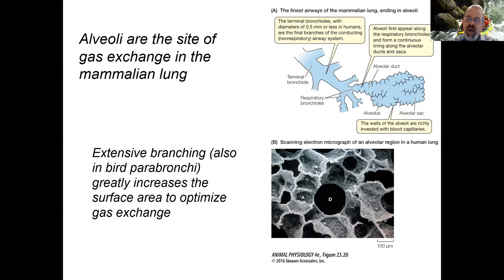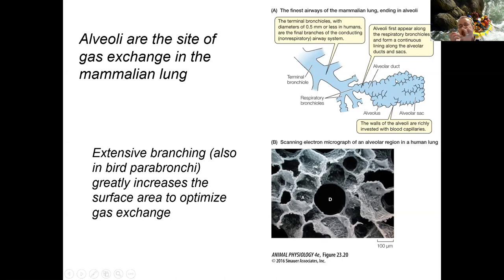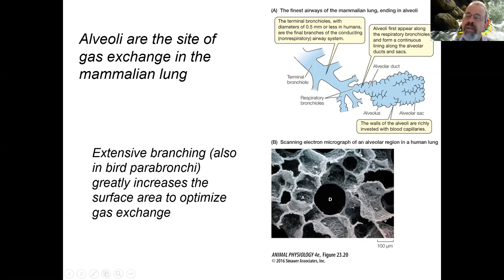One final note: the sites for gas exchange in mammals are the alveoli — little grape-like clusters, where each grape is an alveolus. Much like the parabronchi and secondary lamellae, they're surrounded by blood vessels. In order to be an efficient respiratory organ, you have to have a very thin surface and be richly endowed with capillaries — the hallmarks of any respiratory membrane.